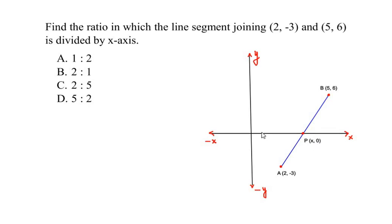So the coordinates of point P is (x, 0). So this is the axis which divides this line AB into two parts. Now we have to find out what is the ratio. So we can take this as m₁, that is part AP, and the part BP can be taken as a ratio of m₂. So we have to find out the value of ratio m₁ is to m₂.